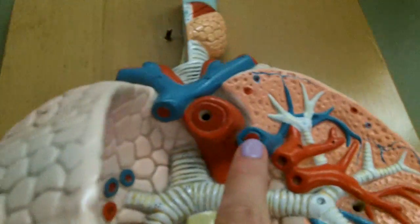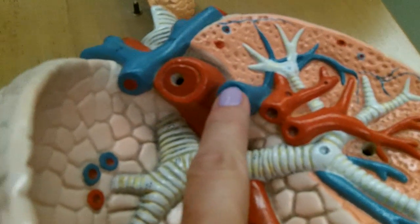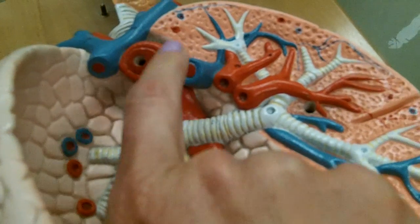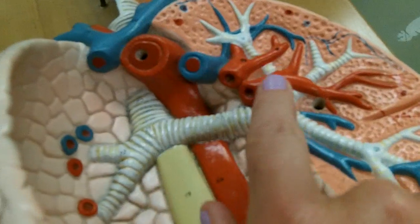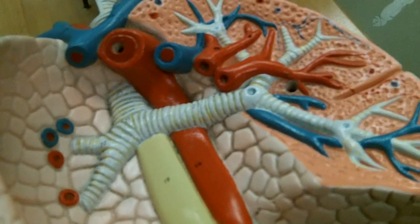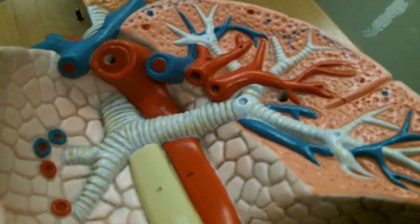Now I'll remind you, oxygen-poor blood is arriving in the lungs through a branch of the pulmonary trunk. It's an artery, right? And then oxygenated blood would go back through the paired pulmonary veins, back to the heart, the left atrium specifically.